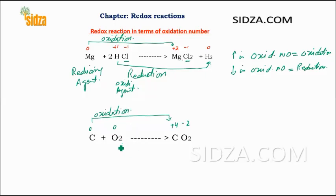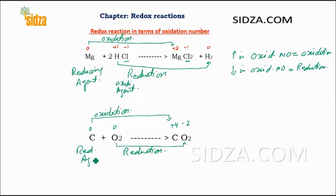Oxygen goes from zero to minus two, so its oxidation number decreases — decrease in oxidation number is called reduction, so oxygen undergoes reduction. The substance which undergoes oxidation is called a reducing agent, and the substance which undergoes reduction is called an oxidizing agent. It is because of oxygen that carbon is oxidized, so oxygen is the oxidizing agent. It is because of carbon that oxygen undergoes reduction, so carbon is the reducing agent.